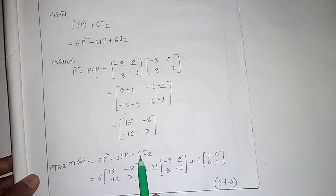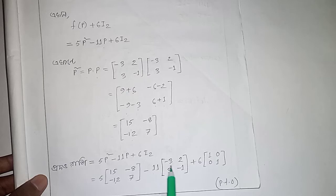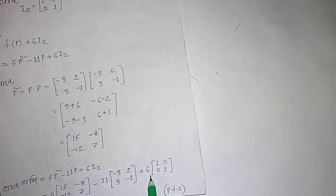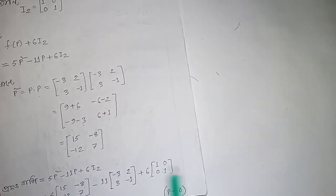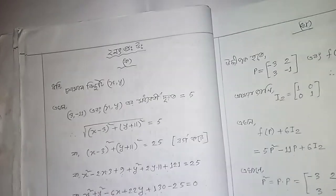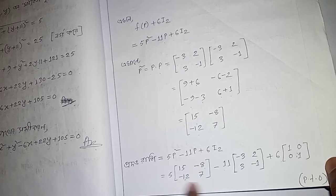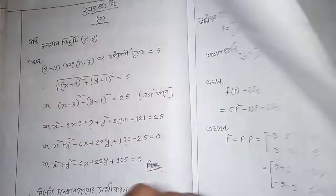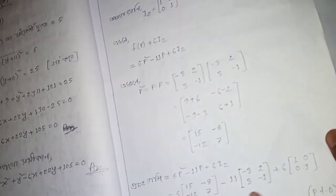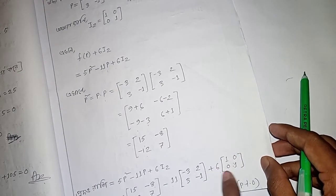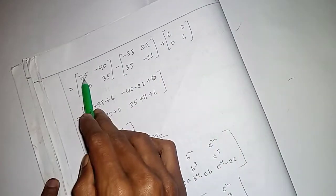5P squared minus 11P plus 6I₂. 5 into P squared — minus 11P — plus 6I₂. Computing step by step. The result: one, two, three, three, three, one, two, three, two, four, six, six. One, two, eight, seven. So the number is 2.